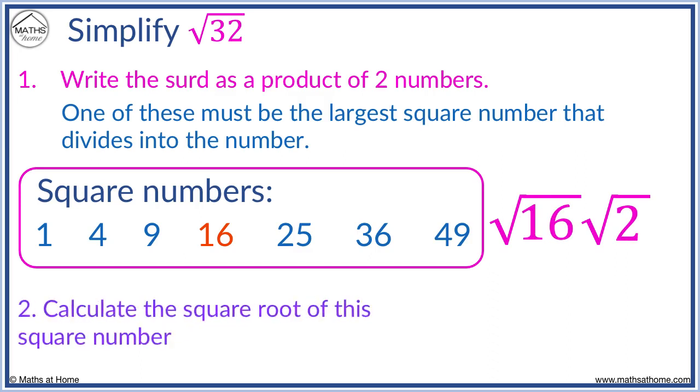We now square root 16. The square root of 16 equals 4. We keep root 2 as root 2. Root 32 simplified equals 4 root 2.